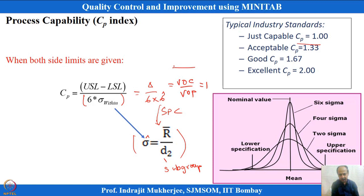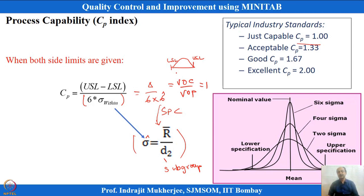A CP equal to 1 is not an industry standard for acceptance — it is just barely acceptable. To improve, you need to reach 1.33 and beyond for non-critical items. For very critical CTQs, we target 1.67 or 2. A 6-sigma process is linked with a CP value of 2.